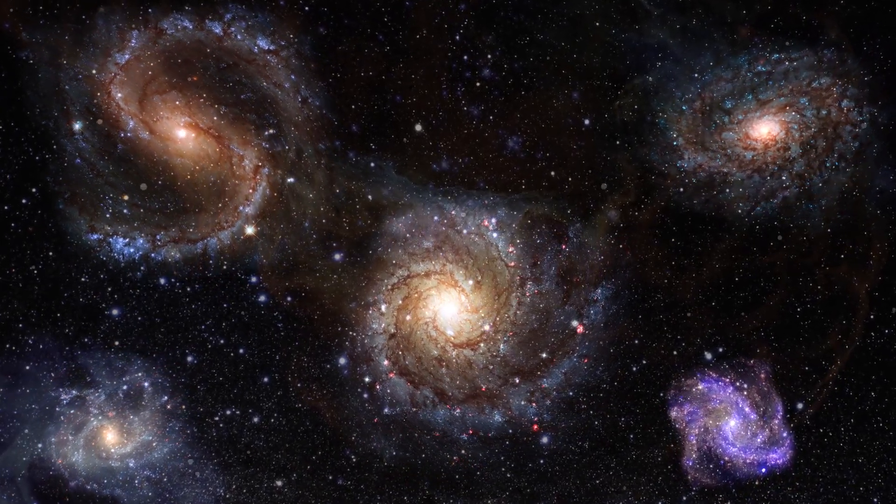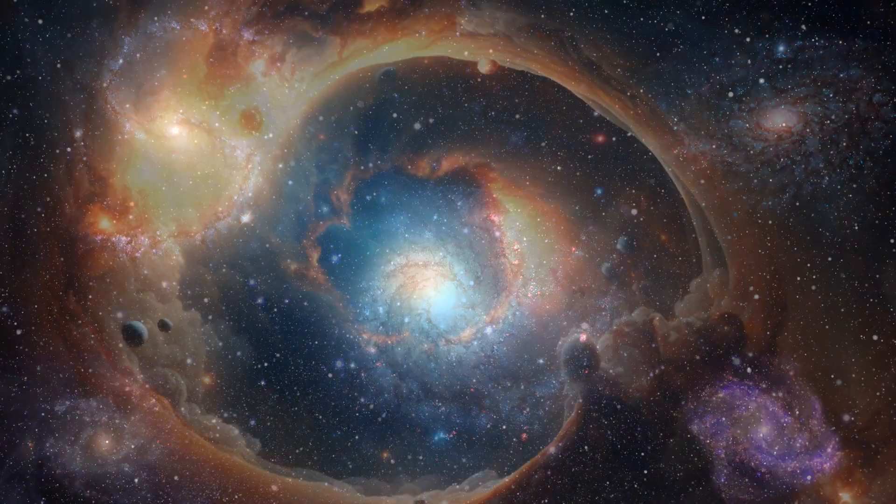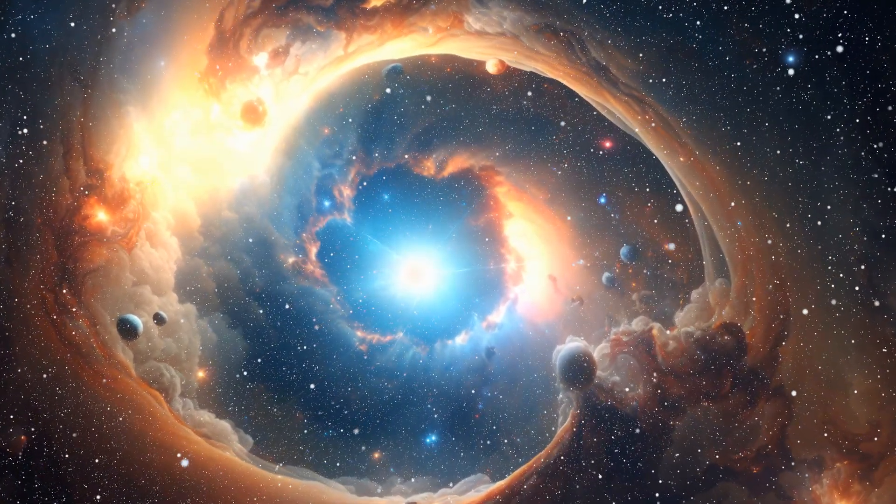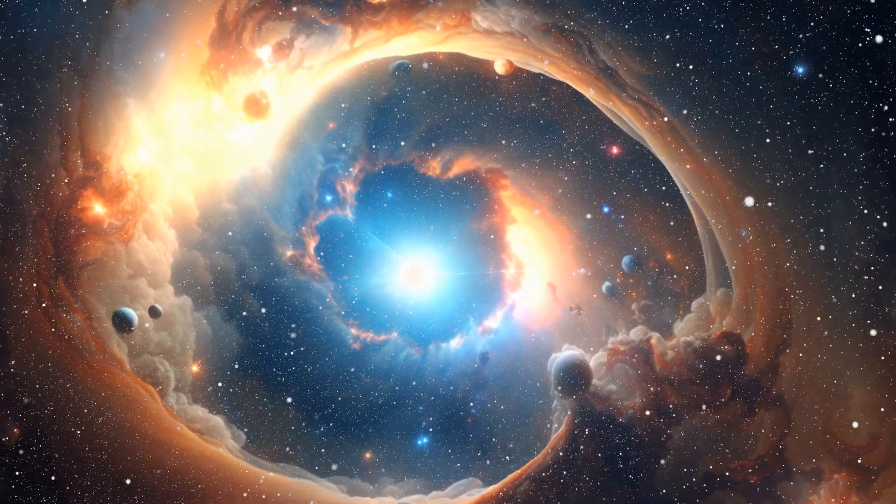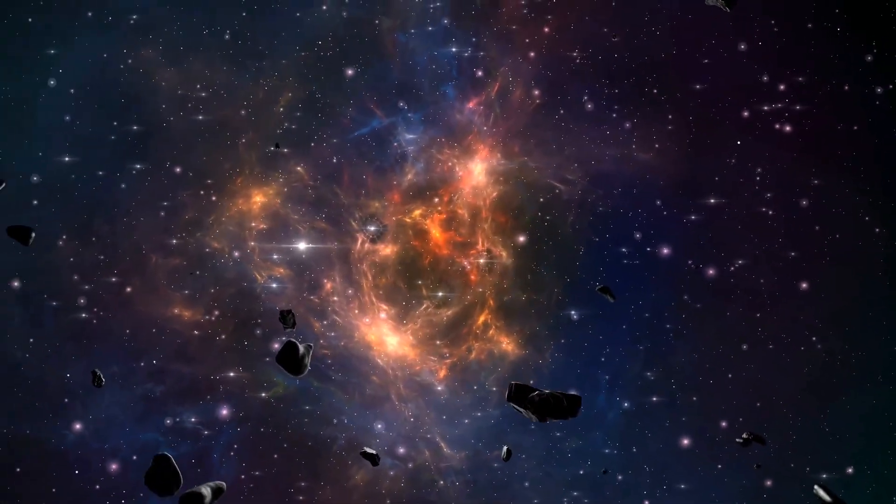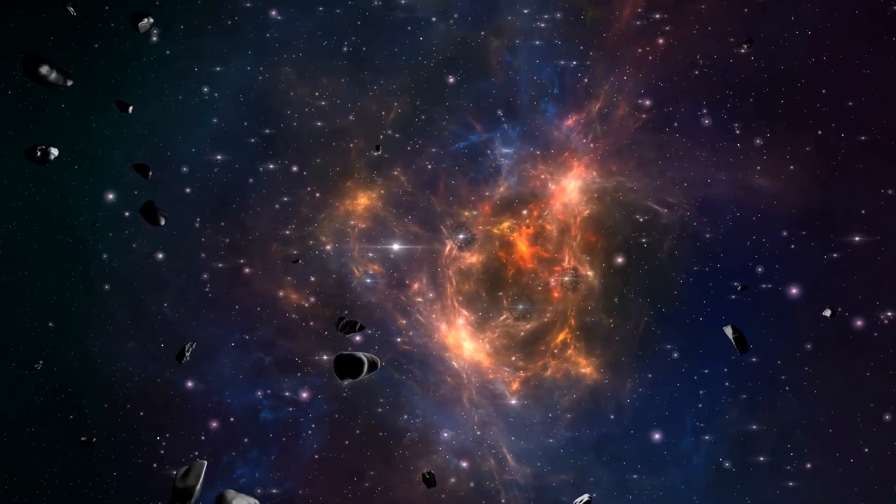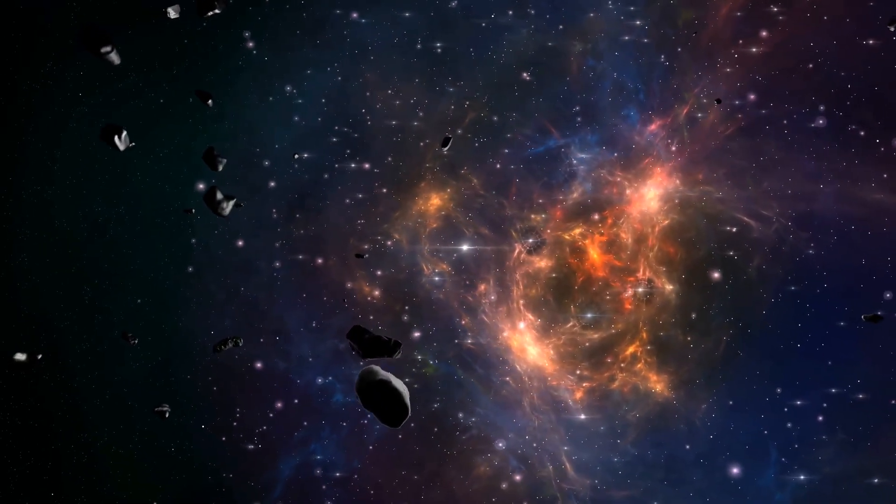Galaxies, we believed, should have been messy in their youth, irregular, clumpy, violently forming stars, while still merging and evolving. Like cosmic toddlers stumbling toward order, they weren't supposed to have clearly defined shapes yet.